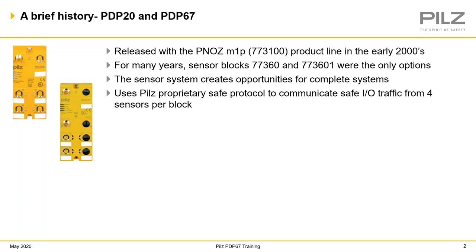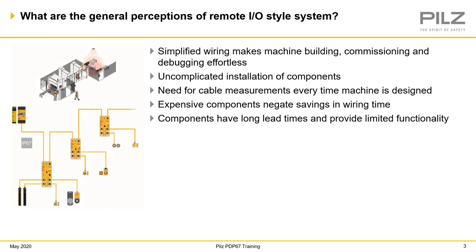We'll start off with a brief overview of what the PDP system is. We're really going to stay at that 10,000-foot view for this presentation — not get into the nitty gritty and technical, but just cover some of the features and benefits you'd be seeing. The PDP system has been around since the early 2000s. It uses a proprietary safe protocol to communicate safe IO from four sensors per block. It started off with two different blocks: our standard blocks and the high-powered blocks. PDP is still evolving and still adding new parts to it.